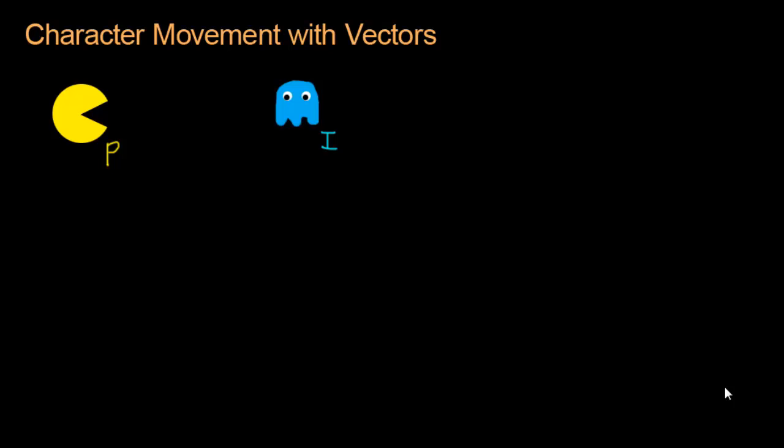One thing about the original Pac-Man was that he always looked in the same direction that he moved. So if he was moving to the right, he was looking to the right. If he was moving up, he was looking up. If he was moving down, he was looking down.